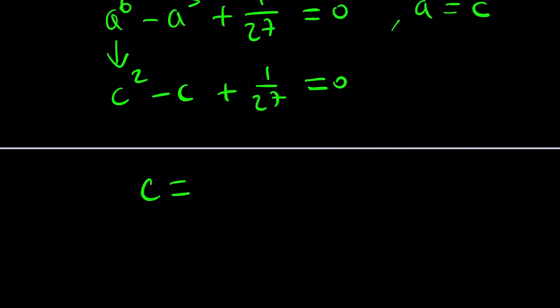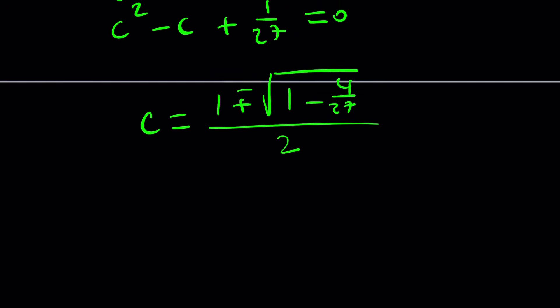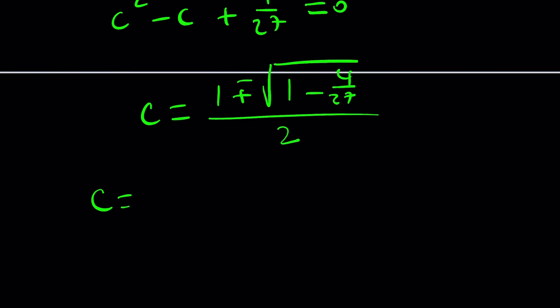This looks like a degree-six equation, but you can use the substitution a cubed equals c. That gives c squared minus c plus one over 27 equals zero, which is quadratic — or bicubic. Using the quadratic formula: c equals one plus or minus the square root of one minus four over 27, divided by two. Simplifying under the radical gives 27 minus four over 27, which is 23 over 27.